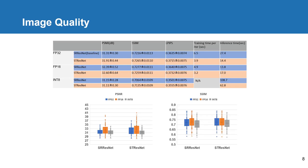The overall ST ResNet achieved better PSNR and SSIM compared to the baseline in full precision floating point 32 inference. Quantization has a negative impact on image quality using PSNR and SSIM metrics. However, compared to the baseline model, ST ResNet with 8-bit quantization achieved even better perceptual quality by LPIPS.